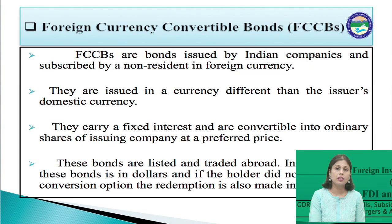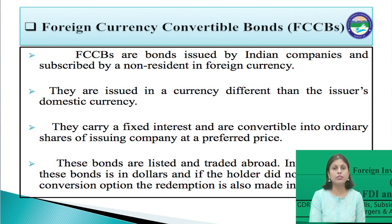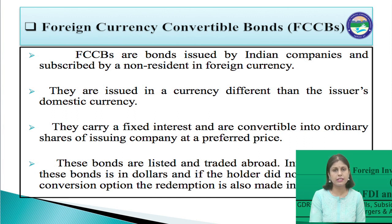There are also Foreign Currency Convertible Bonds, or FCCBs. These are bonds issued by Indian companies and subscribed to by non-residents in foreign currency. They carry a fixed interest or coupon rate and are convertible into ordinary shares of the issuing company at a preferred price. These bonds are listed and traded abroad. Interest paid on these bonds is in dollars, and if the holder does not exercise the conversion option, redemption is also made in dollars. Foreign investors prefer FCCBs, while Indian companies prefer to issue GDRs. The interest rate is low but exchange risk is higher in FCCBs, as interest is payable in foreign currency. Only companies with low debt-equity ratios and large forex earning potential choose FCCBs to raise funds from the international market.